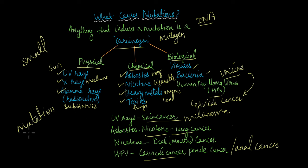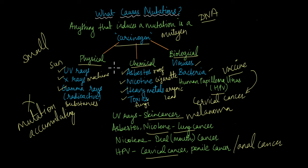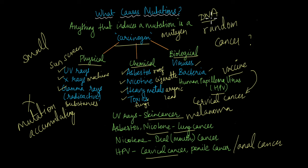More than that, the mutations have to keep accumulating in the body to the point where the three types of genes involved can no longer detect them — that is when tumor cells will be formed, which then leads to cancer. Some DNA mutations are actually very random. A lot of cases of cancer don't have an exact cause because these mutations occur and begin accumulating randomly in the cell.